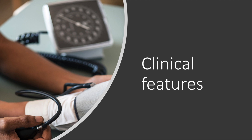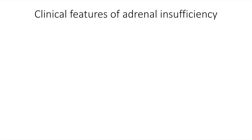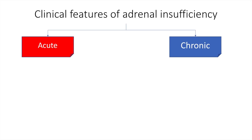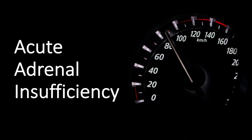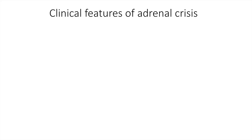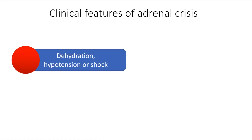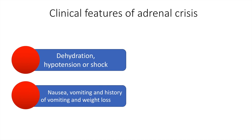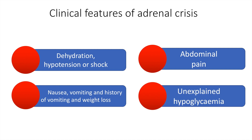Let us now move on to the clinical features of adrenal insufficiency or Addison's disease. The clinical features may be acute or chronic. Acute adrenal insufficiency or adrenal crisis is characterized by dehydration, hypotension, shock, nausea, vomiting, history of weight loss, abdominal pain, and unexplained hypoglycemia.